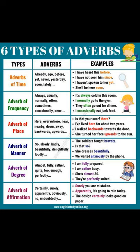Example words for adverbs of affirmation and negation: certainly, surely, apparently, obviously, no, undoubtedly. Example sentences: Surely you are mistaken. She is undoubtedly the best goalkeeper in the team. The design certainly looks good on paper. Apparently it's going to snow today. She was in tears and obviously very upset. It is undoubtedly one of the best songs of the year.